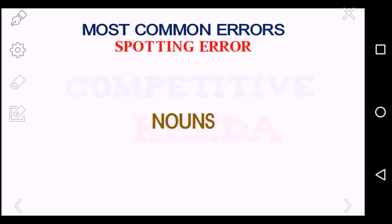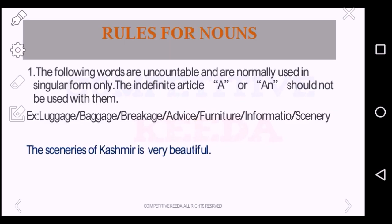It is noun. We know noun is a very important part of a sentence, so we will first study about it. Let's go to the first rule. The following words are uncountable and are normally used in singular form only. The indefinite article 'a' or 'an' should not be used with them. 'A' or 'an' are normally used to indicate that this is only 1, but in the case of uncountable nouns, we cannot say it is 1 or 2 or 3, as we are calling them uncountable.